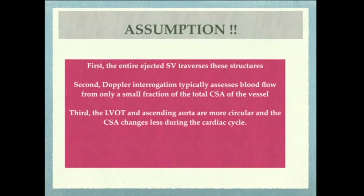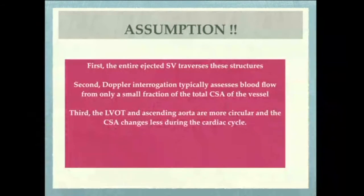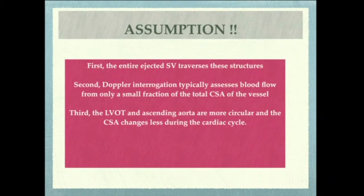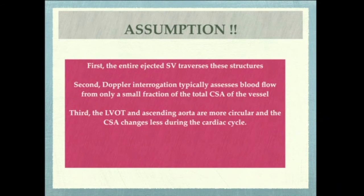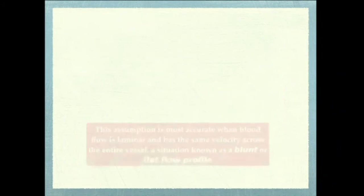The third assumption is that the LVOT and ascending aorta are more circular than we might consider. Out of the four areas — LVOT, RVOT, tricuspid, and mitral valve — the blood passes in the same cardiac output amount, but the LVOT and ascending aorta are considered the most circular part, so we consider that area to be the most important for calculations.